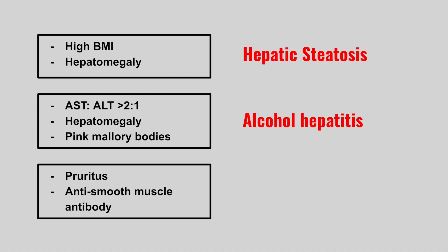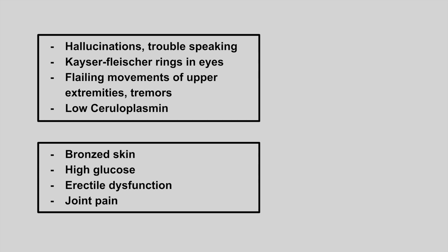The next patient is going to have pruritus and anti-smooth muscle antibody present. This is autoimmune hepatitis. Because this is an autoimmune condition, think of usually a middle-aged female. It may be associated with other autoimmune conditions like Hashimoto's hypothyroidism. The anti-smooth muscle antibody along with itching is really important here.